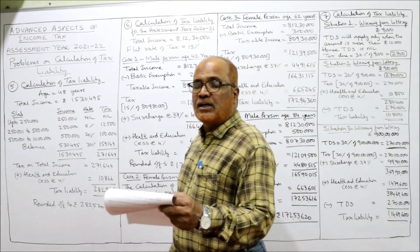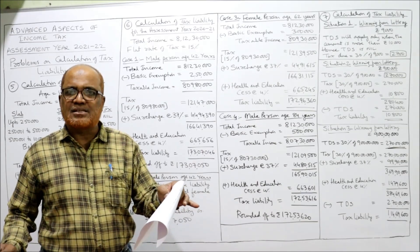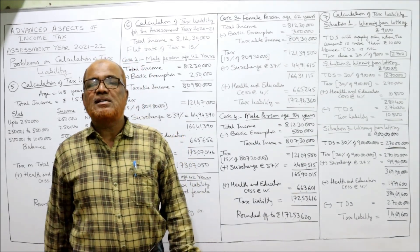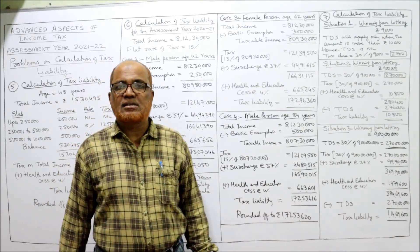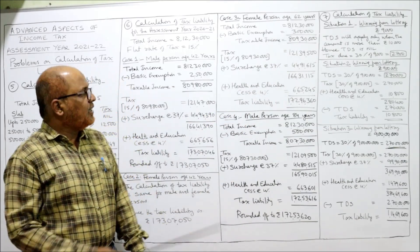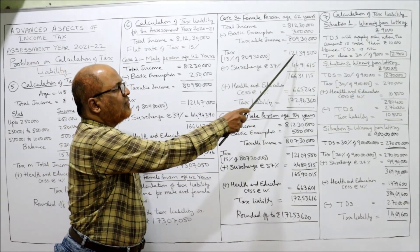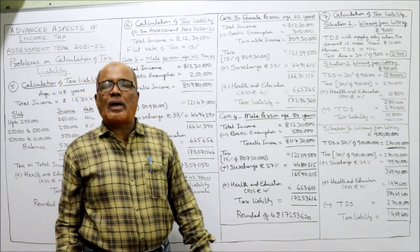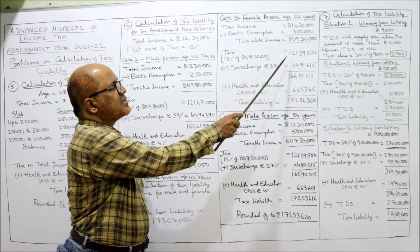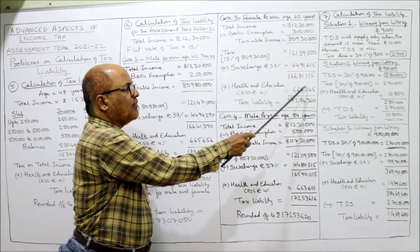Case 3: if the SSC is a female person aged 62 years. Age 62 means senior citizen; basic exemption limit is three lakh. Total income eight crore twelve lakh thirty thousand, less basic exemption three lakh, gives eight crore nine lakh thirty thousand. Fifteen percent of eight crore nine lakh thirty thousand gives one crore twenty-one lakh thirty-nine thousand five hundred. Surcharge thirty-seven percent applies since total income exceeds five crore. Thirty-seven percent of this amount gives 44,91,650.